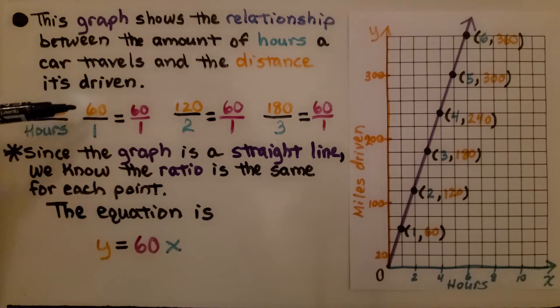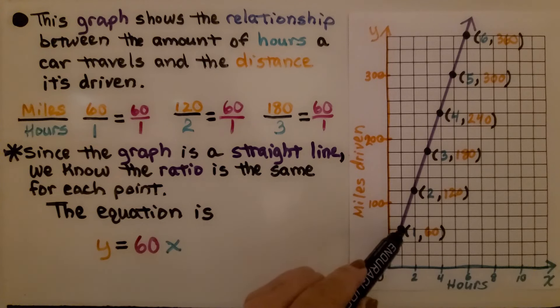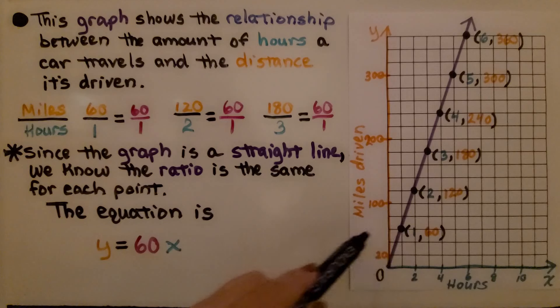When we're at 1 for x, the hours, we're at 60 for the miles driven. We know the car is going 60 miles per hour. It's going 60 miles in one hour. Now, since the graph is a straight line...